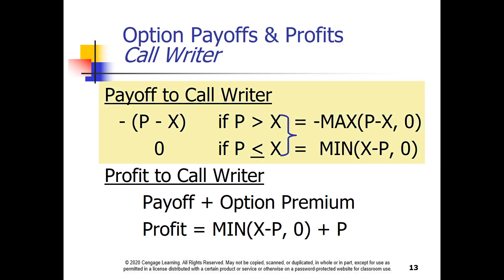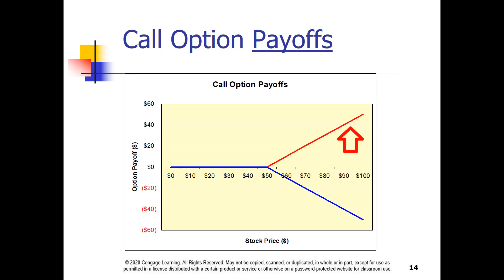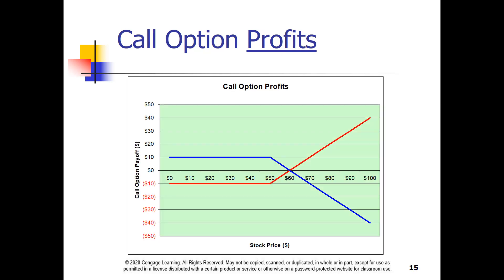Options are a zero-sum game, meaning the profit to the holder is mirrored by the loss to the writer. The payoff to a call writer is exactly the negative of the payoff to the holder. You may remember from algebra that minus the maximum of P minus X or zero is equal to the minimum of X minus P or zero. For a call writer, the best case is to sell the call and never hear from it again — in that case, the writer gains the call premium. The payoff and profit for a call writer can be negative. Note that the payoff to buying a call is unlimited, and the loss to the call writer is also unlimited. Including the option premium in the graph shifts the lines: the best the writer can gain is the option premium, and the worst the buyer can lose is the option premium.